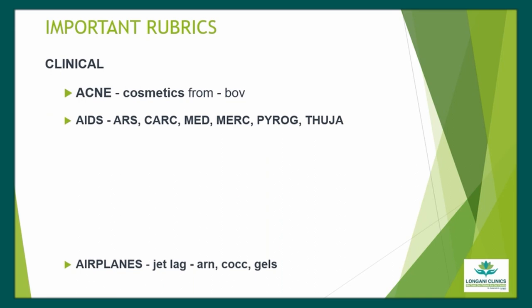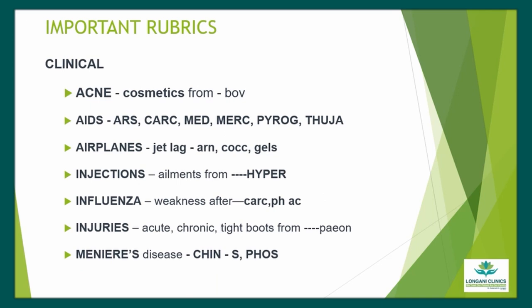Clinical chapter: Acne from Cosmetics — drug is Bovista. AIDS — drugs are Arsenic, Carcinocin, Medorrhinum, Merc, Pyrogenum, and Thuja. Airplane Jet Lag — drugs are Arnica, Cocculus, and Gelsemium. Injections, ailments from — drug is Hypericum. Weakness after Influenza — drugs are Carcinocin and Phosphoric Acid. Injuries, Chronic from Tight Boot — drug is Paonia. Meniere's Disease — drugs are Chionanthus and Phosphorus.